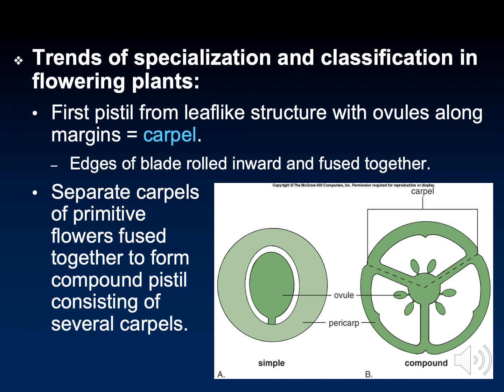Just as there is great diversity in angiosperms, there is a large variety of differences in flowers. Some flowers may have a single ovule in their carpel — this results in the formation of a fruit known as a drupe, with a single pit. Some carpels may have multiple ovules divided up into little sections, which would eventually develop into a fruit with multiple seeds.